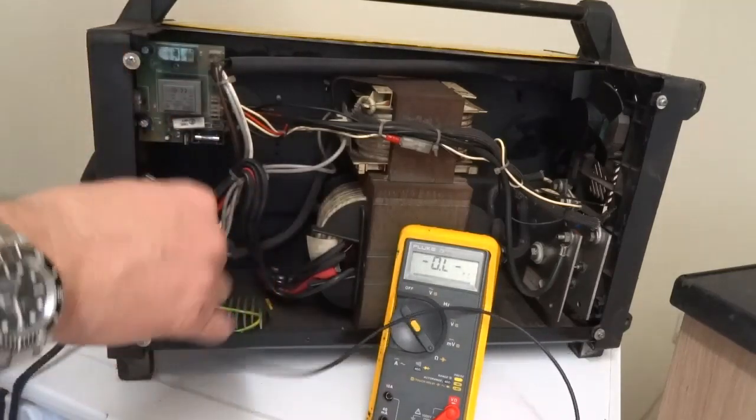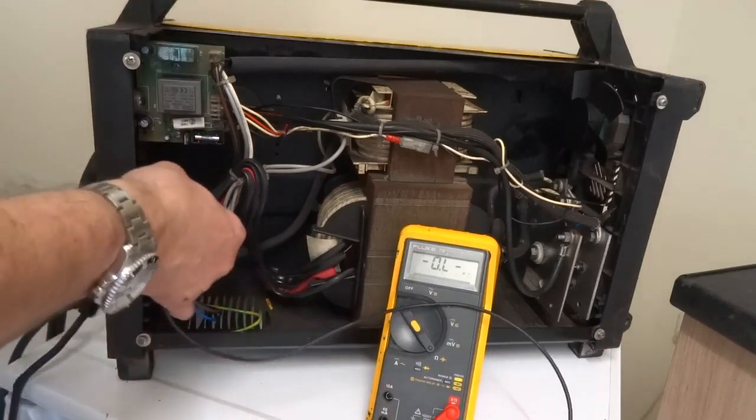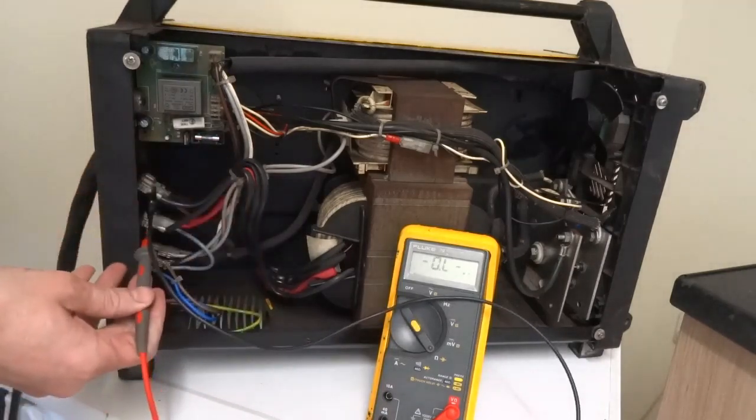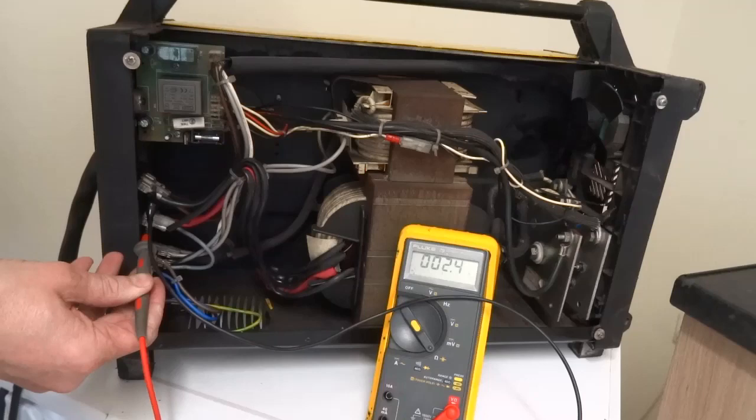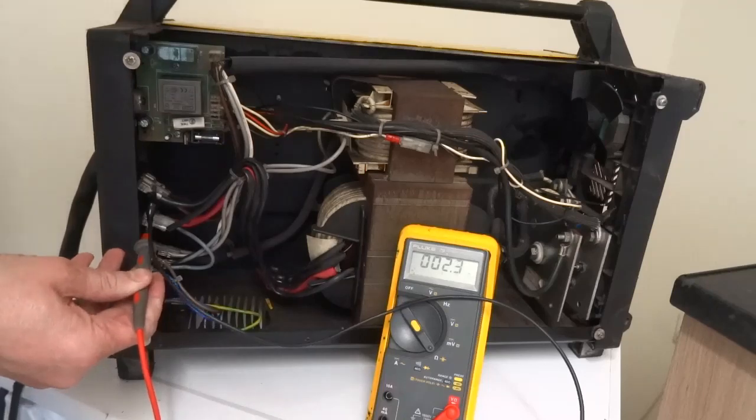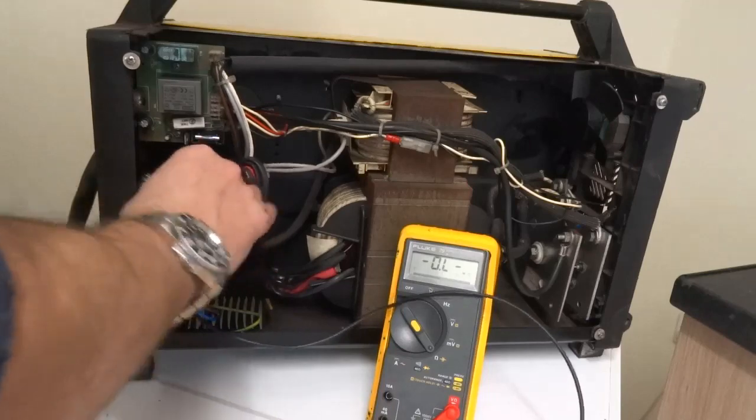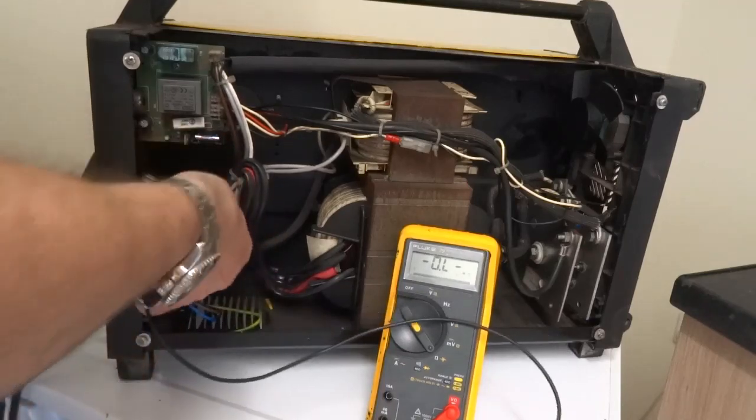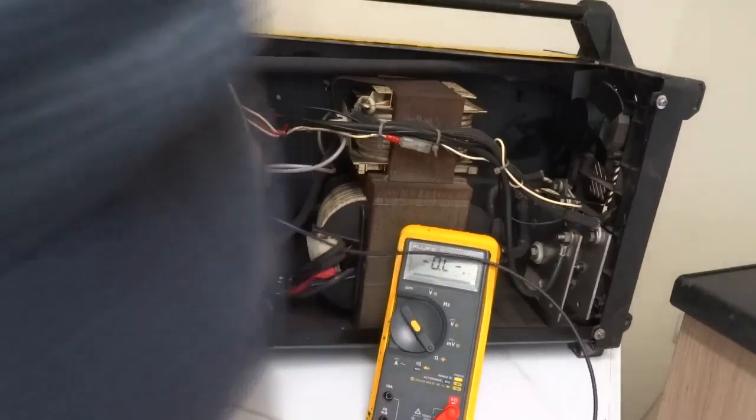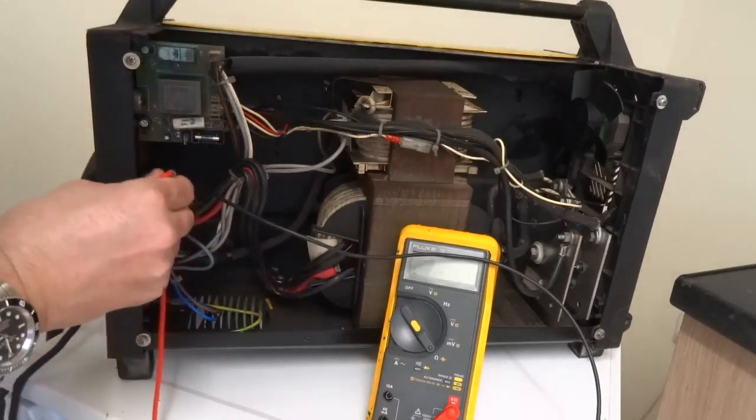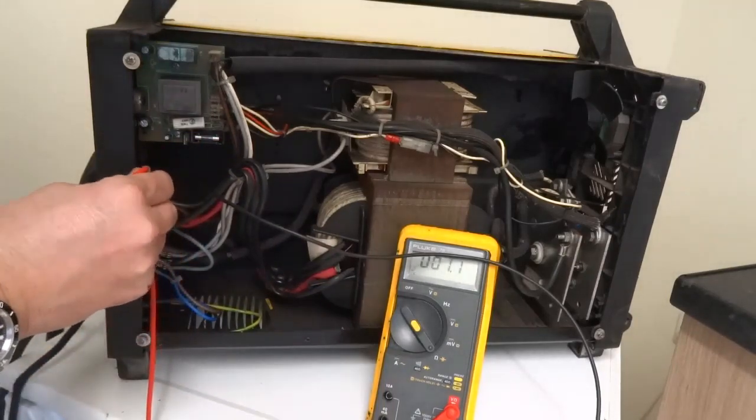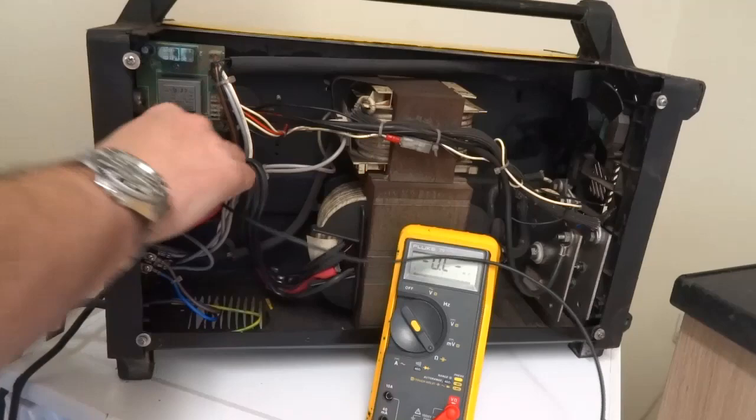Then we need to test both sides of the primary windings. It says 2.5 ohms, now it says 1.1 ohms, so pretty good.